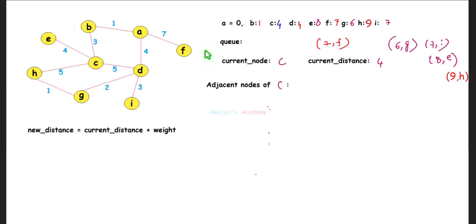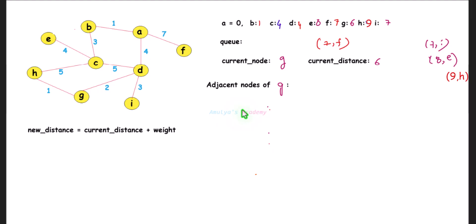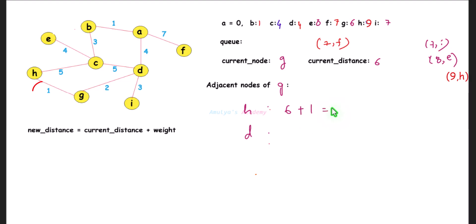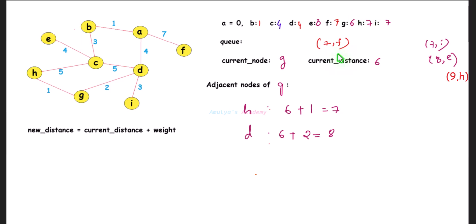Remove node G from the queue with distance 6. Current node is G with distance 6. Adjacent nodes of G are H and D. New distance to H: 6 + 1 = 7 — H's current smallest distance is 9, and 7 is smaller, so update H to 7 and add (7, H) to the queue. New distance to D: 6 + 2 = 8 — D's smallest distance is 4, so 8 is greater; skip it.